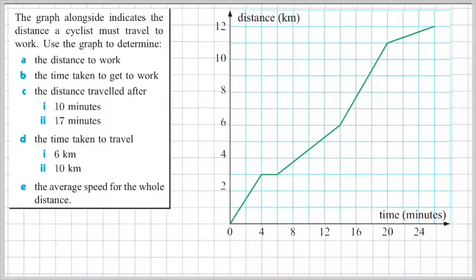So in our first question, it says the graph alongside indicates the distance a cyclist must travel to work. Use the graph to determine the following questions. Pause the video here and read through the questions so you're familiar with what we're going to cover in this section.